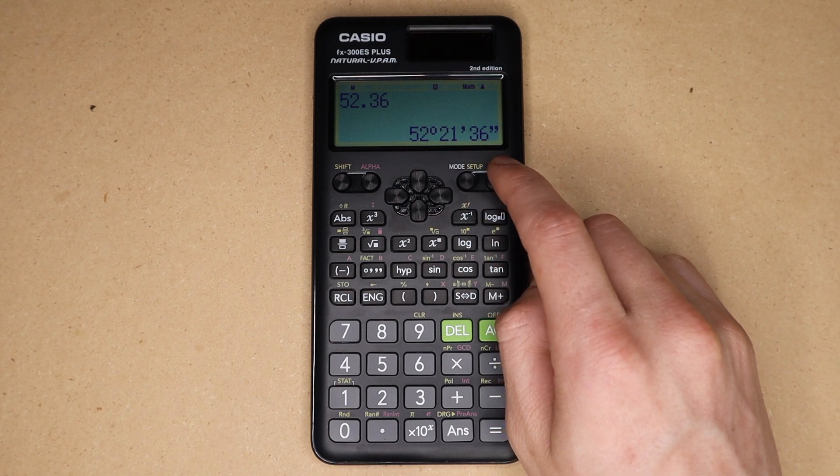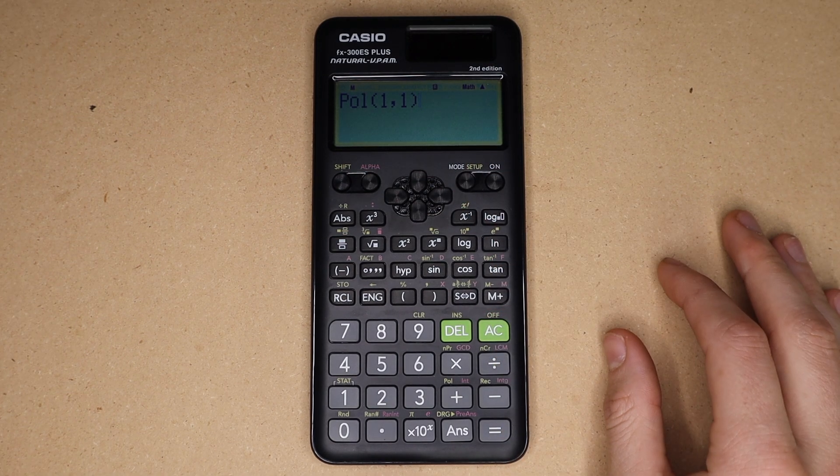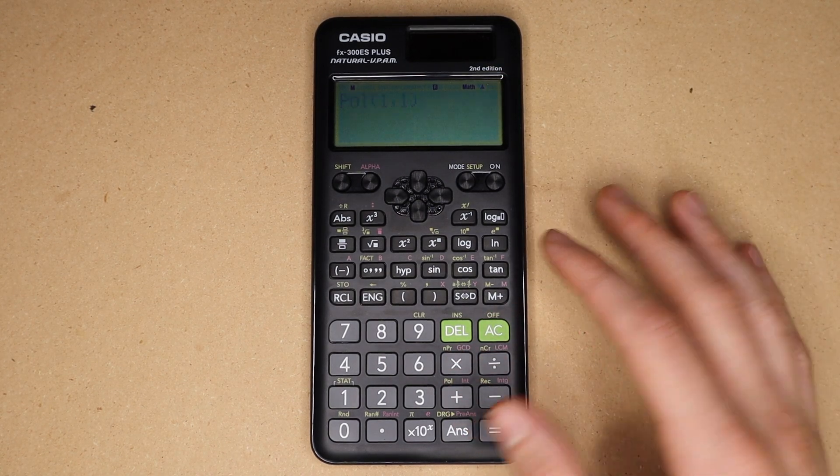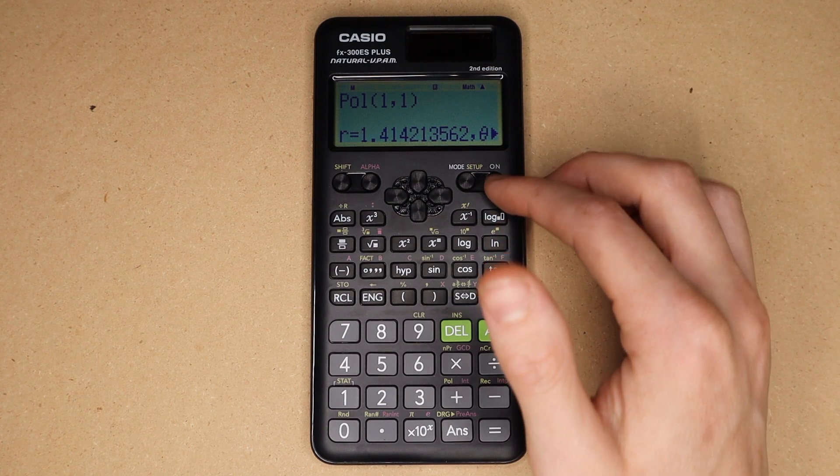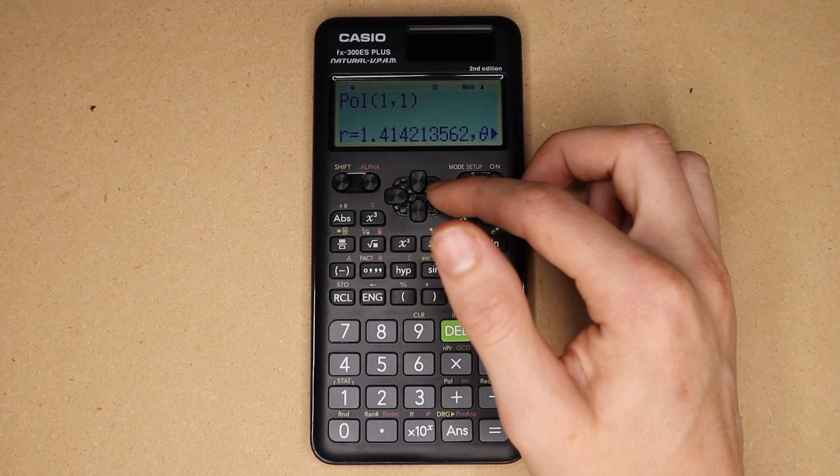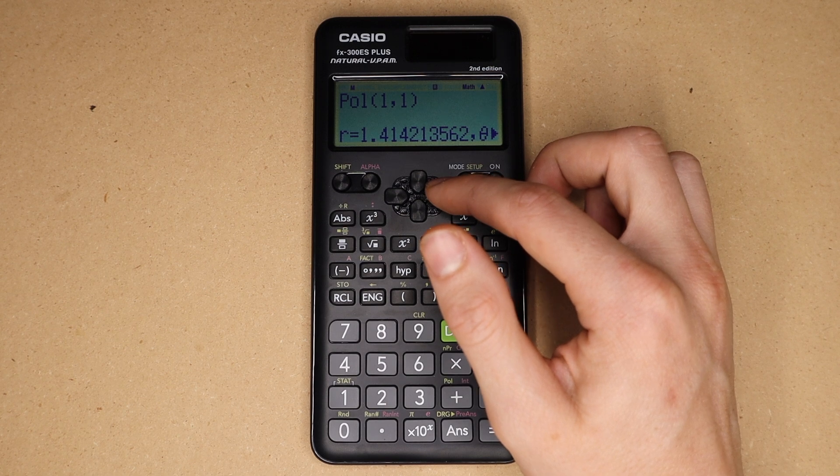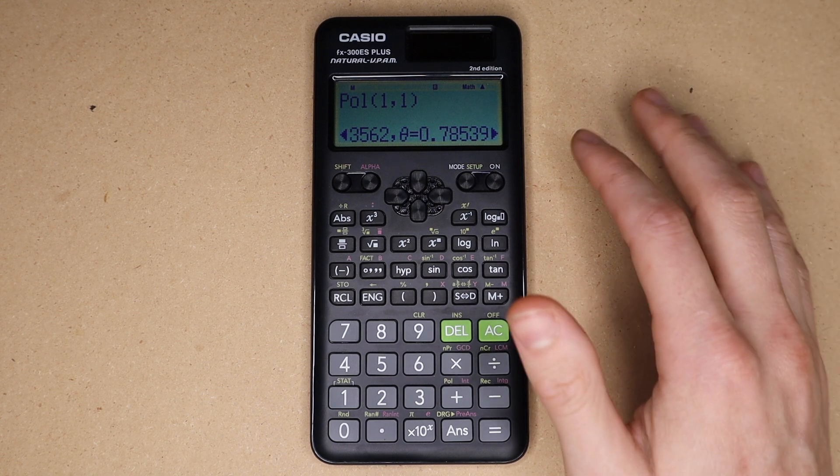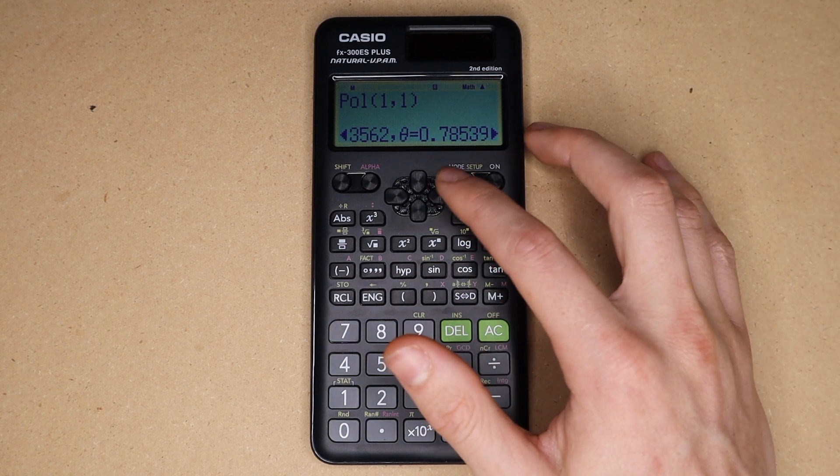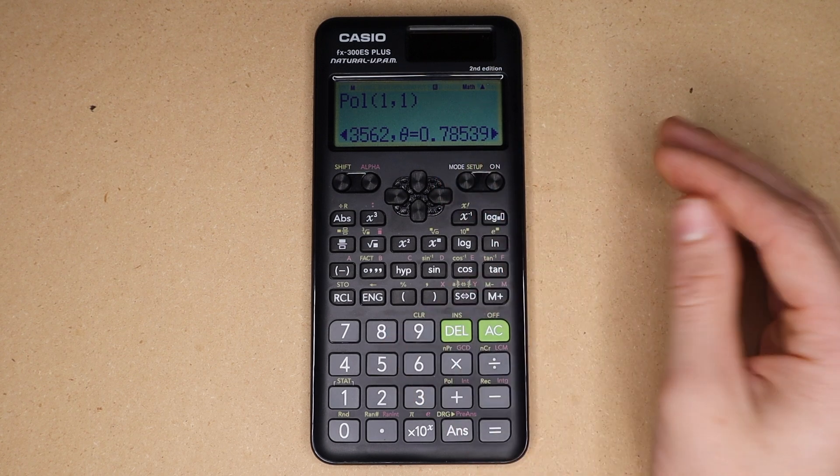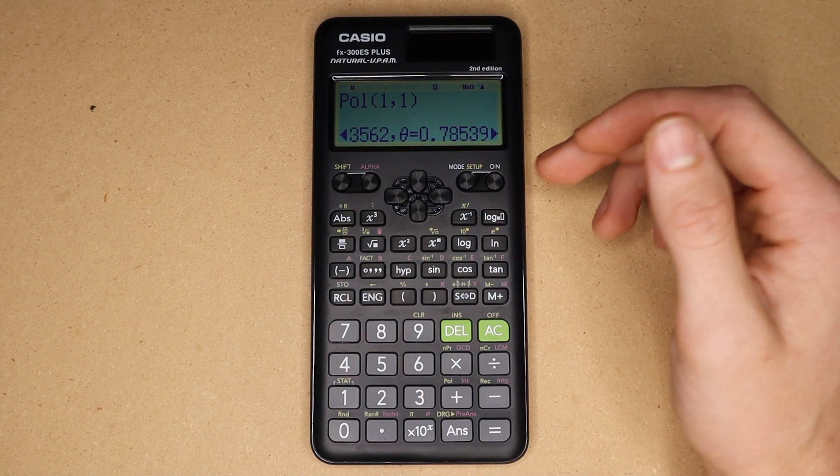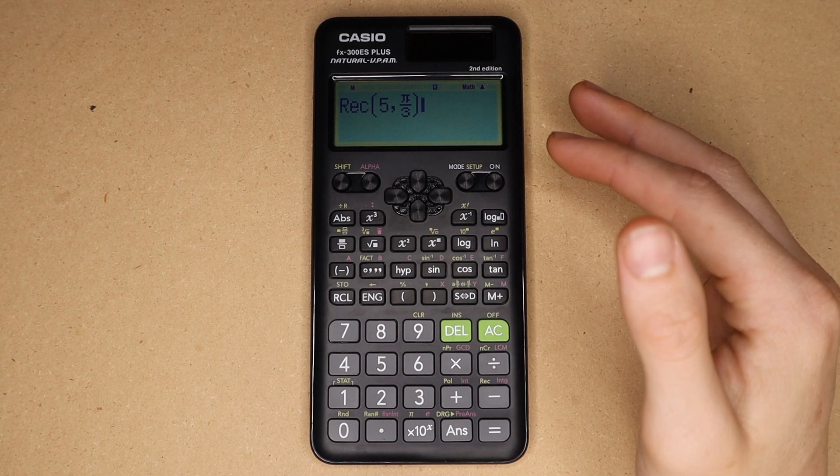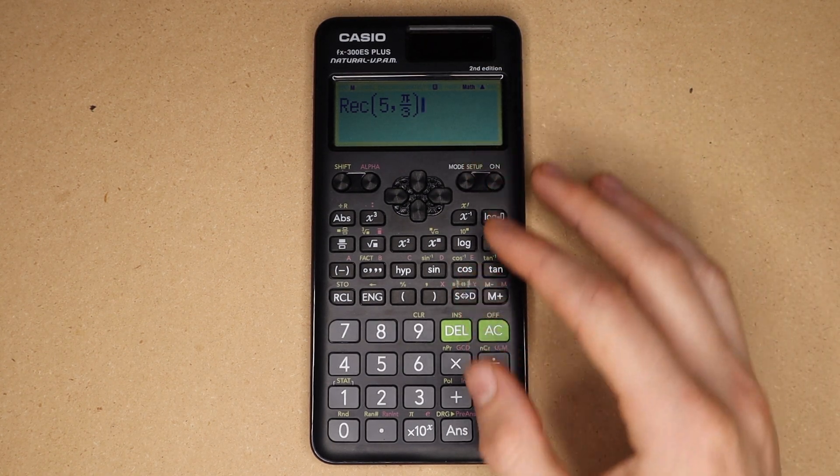Also for some reason they decided to include the ability for you to convert from standard rectangular coordinates into polar coordinates. One comma one here is equivalent to r equals one point four one four and theta equals point seven eight five three nine. And when doing this just keep in mind that you will not be getting exact answers for your r and theta values - they are given here in their decimal equivalents. And then also there is a function to convert back from polar coordinates into rectangular coordinates.